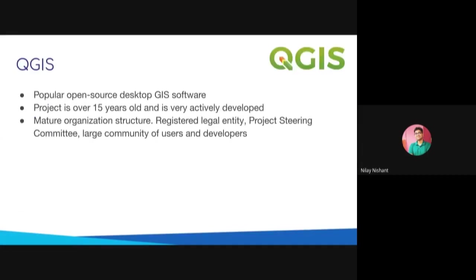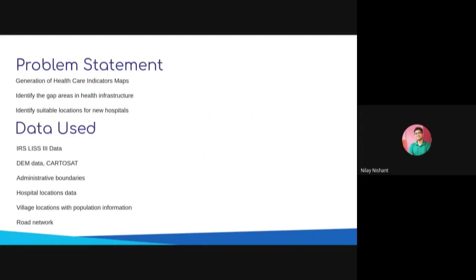QGIS is an open source software that has been under active development for over 15 years, with a very strong community and a strong project steering committee. The problem statement here is the generation of healthcare indicator maps, where we can also identify the gap areas in the health infrastructure.